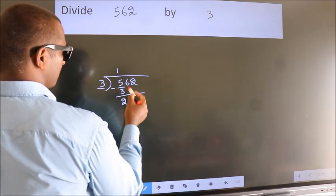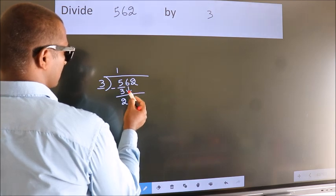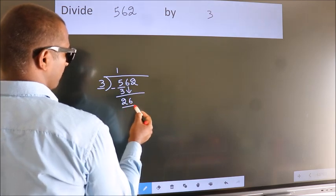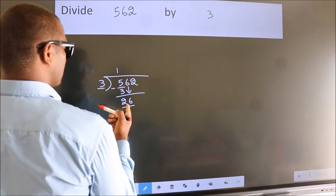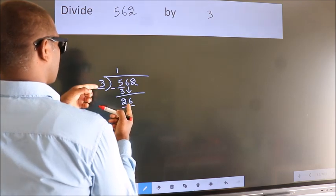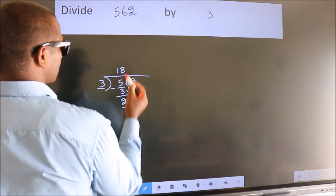After this, bring down the beside number. So, 6 down. So, 26. A number close to 26 in 3 table is 3 8s 24.